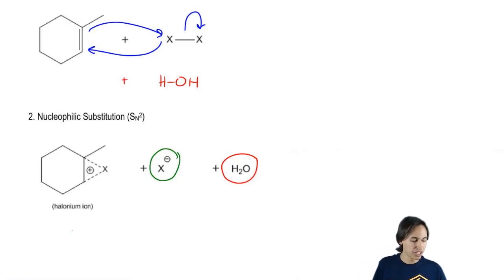So why wouldn't I just get the X negative attacking and get a halogenation reaction like before? Well, the answer is that I will. Some of that actually will happen. Some of the X negative will attack and I will get halogenation. But that's not going to be what happens the majority of the time. The majority of the time, this bridged ion is so unstable that it's going to react with the first nucleophile that it encounters, even if it's not the strongest.